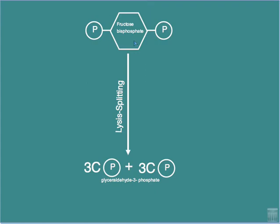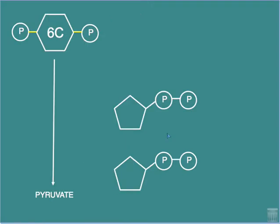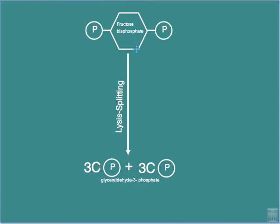Two ATPs are required to phosphorylate glucose. The double-phosphorylated glucose becomes transformed and energized and is referred to as fructose bisphosphate — termed 'bis' as opposed to 'di' because both phosphates attach directly to the six-carbon structure, in contrast with adenosine diphosphate where both phosphates are attached to each other and then to the ring.